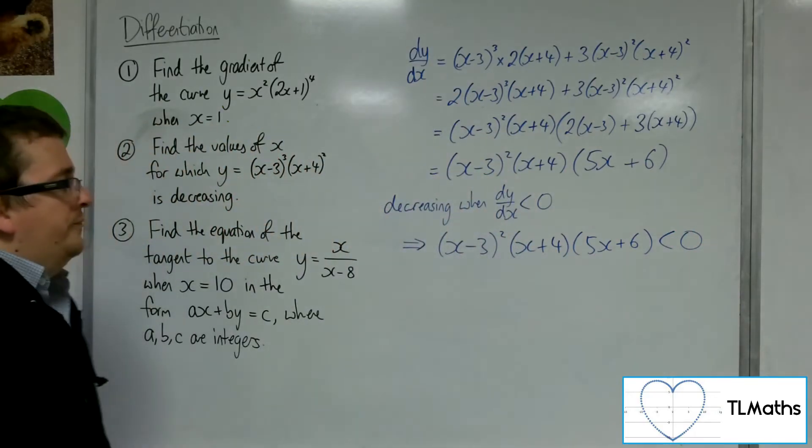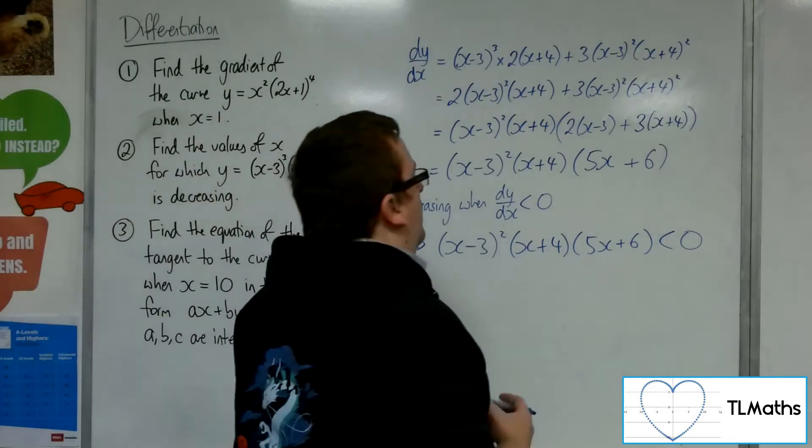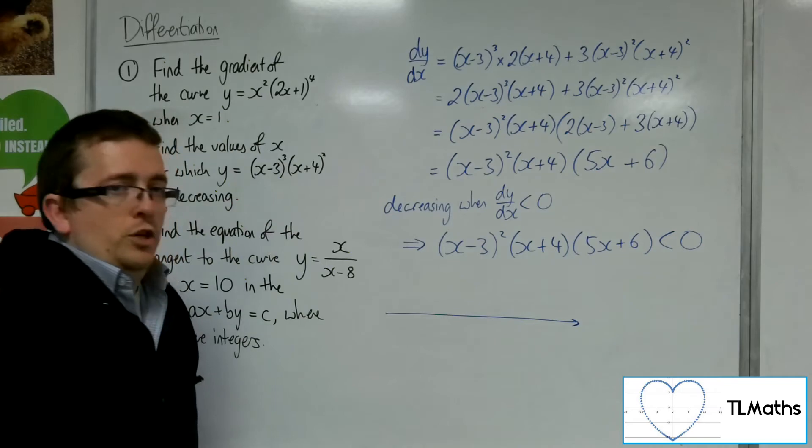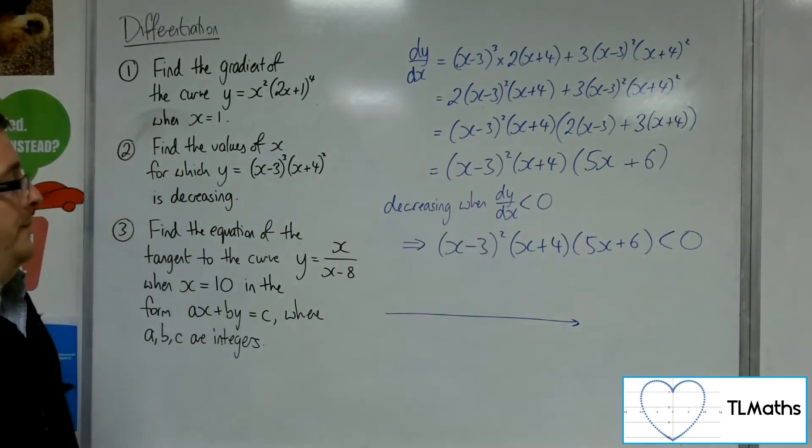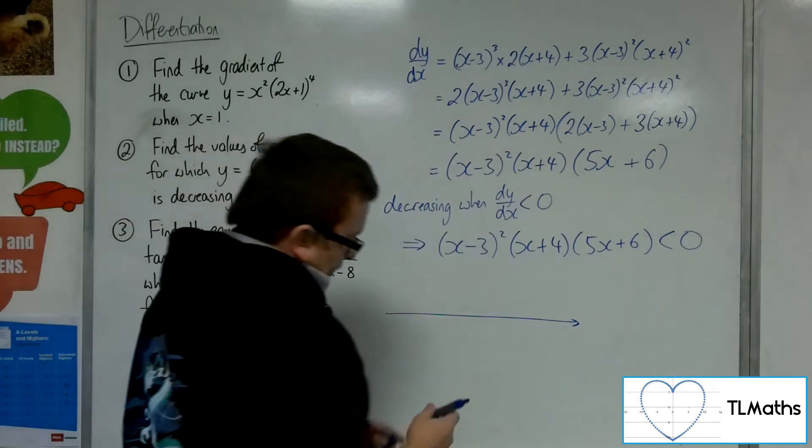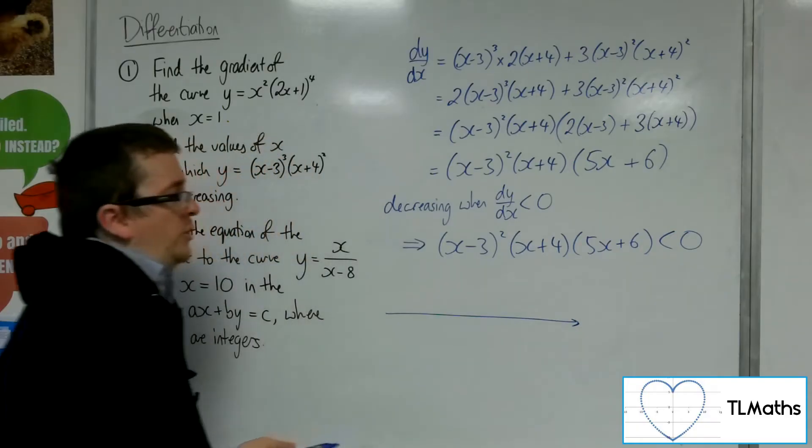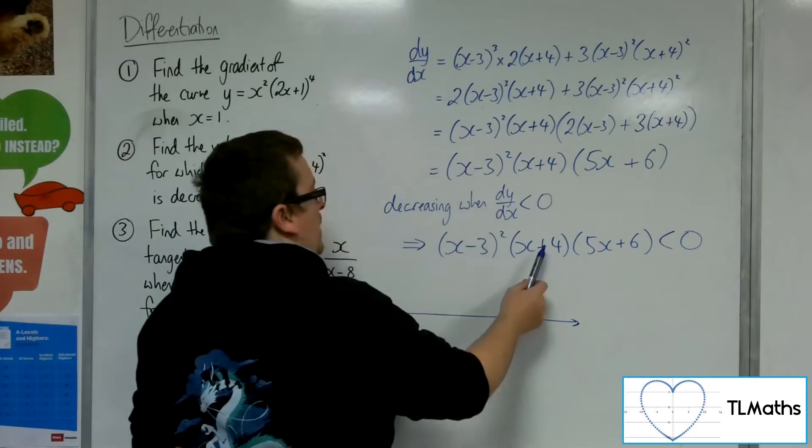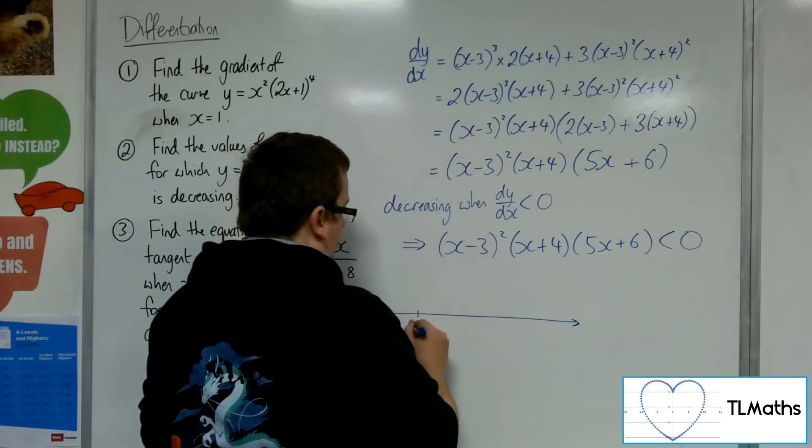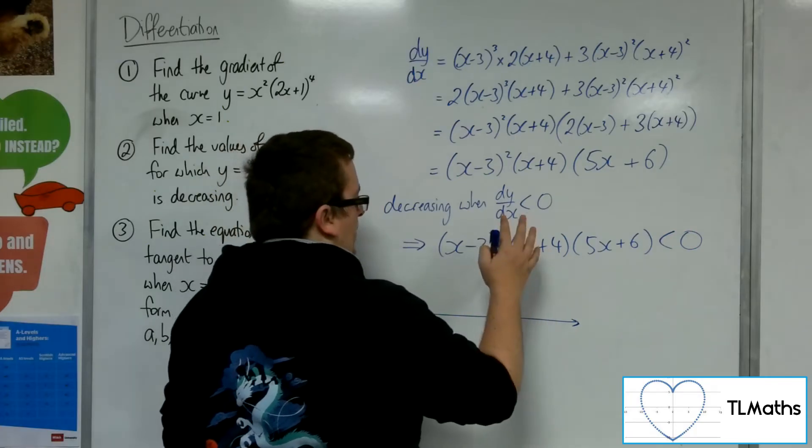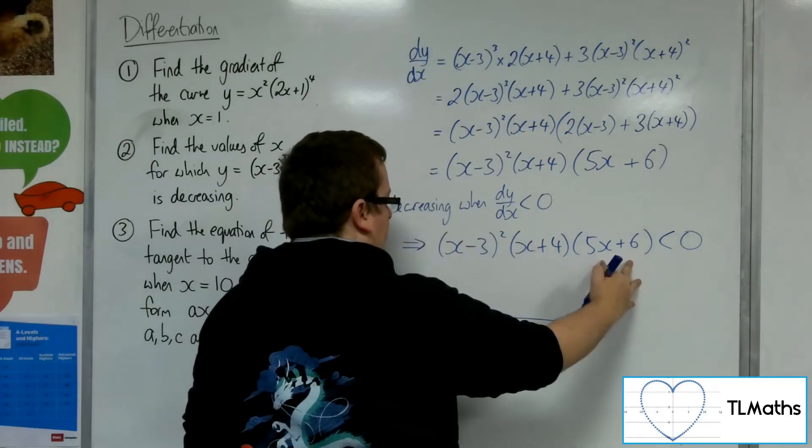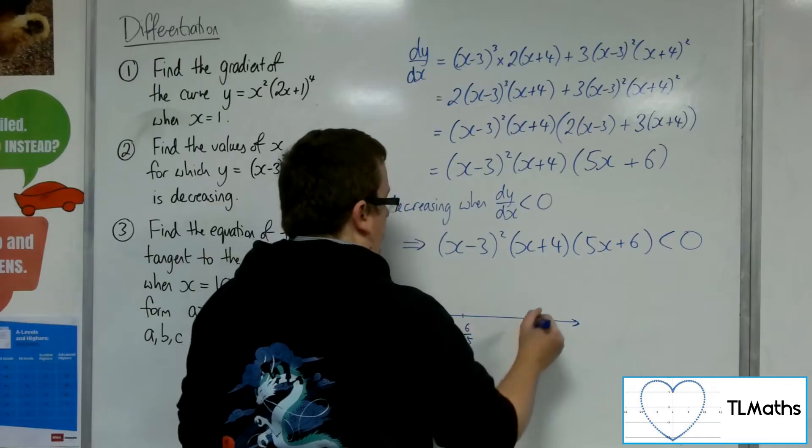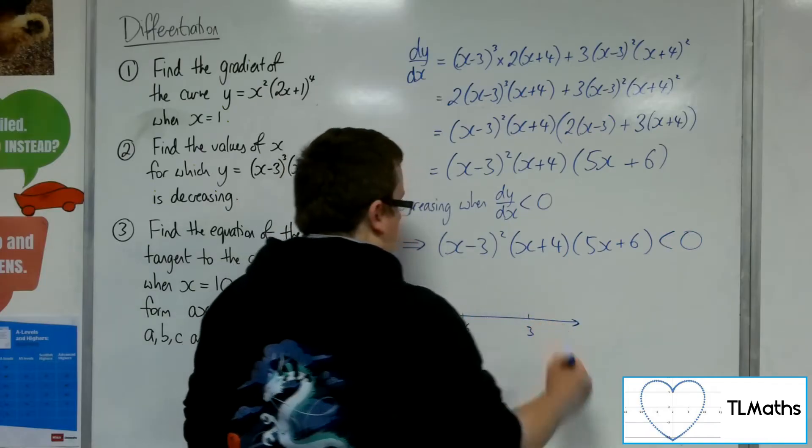So really what I want to do is I want to do a sketch of this curve. Now let's use our curve sketching skills to do that. So we've got it crossing through at minus 4. We've got it crossing through at 3 and minus 6 fifths. So minus 6 fifths, and then we've got 3.